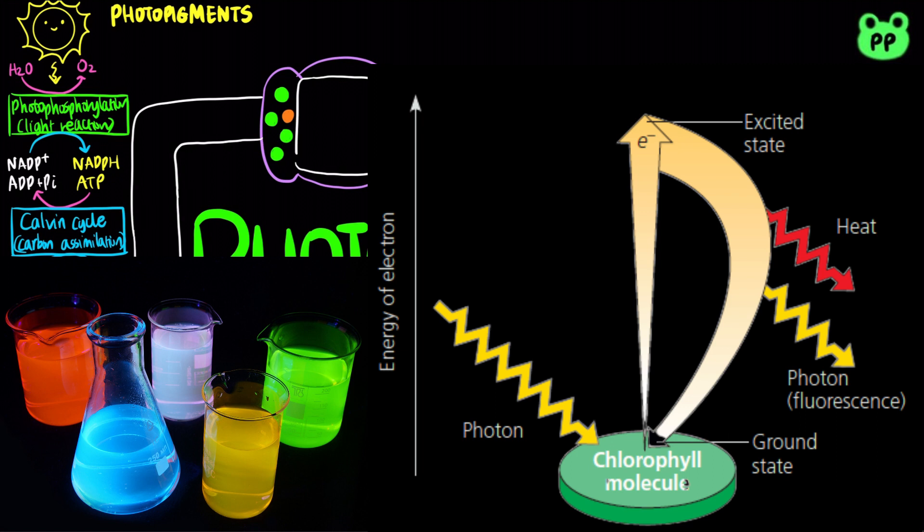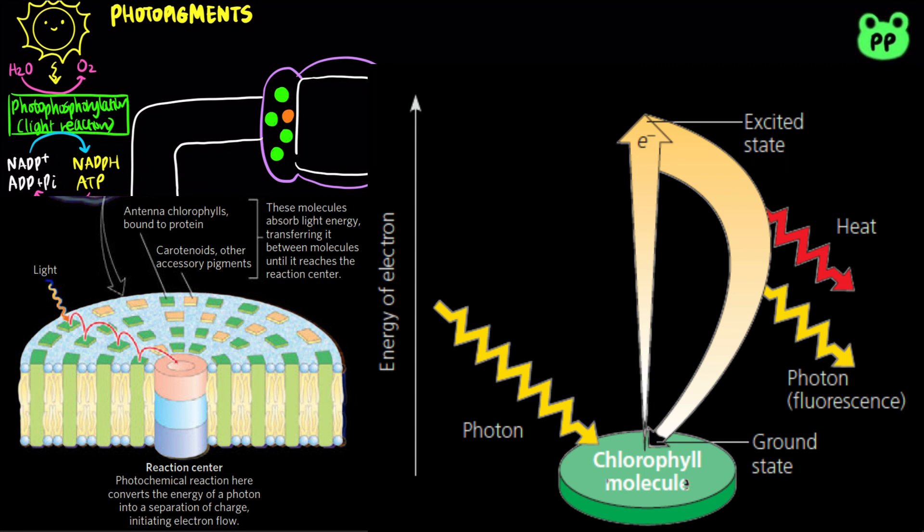However, during photophosphorylation, the free energy released from the decay of an excited electron is directly transferred to a neighboring molecule in a process known as exciton transfer.